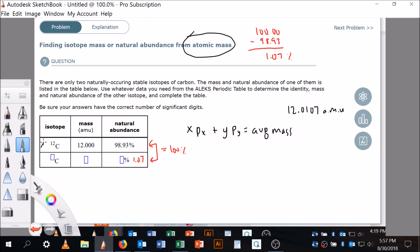Okay, so I'm gonna let this guy be X and this guy be Y. If that's the case, then the mass of X is 12.000 times the percentage of that, which is 0.9893.